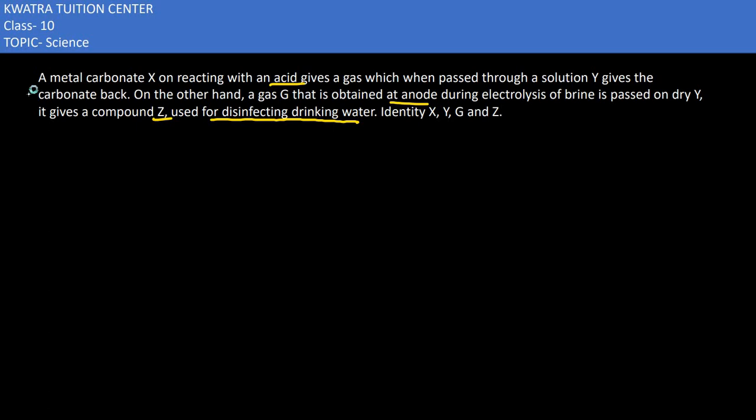X must be calcium carbonate. Calcium carbonate reacts with HCl to give calcium chloride plus carbon dioxide and water. The gas being released here is carbon dioxide, so G is carbon dioxide.